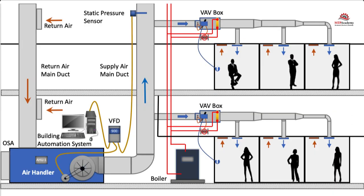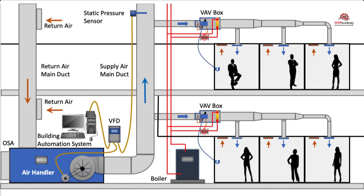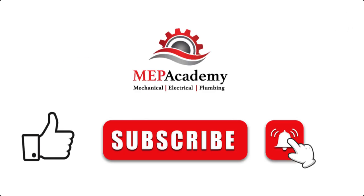In summary, the use of variable air volume VAV has been shown to save energy when combined with a supply fan VFD. As the demand in the spaces fluctuates, the VAV box dampers open or close proportionately and the air handler fans respond through various control strategies. Variable air volume systems save more energy than a constant volume system. If you liked this video, please give it a thumbs up and subscribe to our channel.